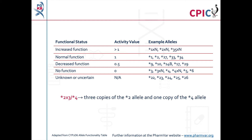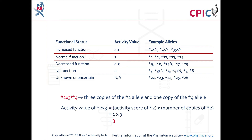For example, a patient with the genotype star 2X3 star 4 has three copies of the star 2 allele and one copy of the star 4 allele. The activity score of alleles present in multiple copies is calculated by multiplying the activity score for the allele by the number of copies present. In this case, the activity score of star 2X3 is 1 multiplied by 3, which equals 3. Further information about CYP2D6 alleles can be found at the PharmVar website at www.pharmvar.org. A link to PharmVar is also given in the description below this video.